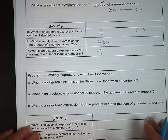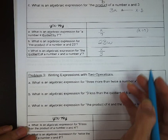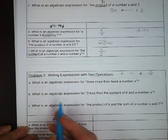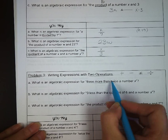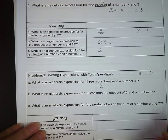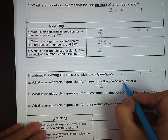Okay, moving on to problem number three. Writing expressions with two operations. Now we're going to be combining, so we need to pay attention to what comes first and what it's talking about. So, what is an algebraic expression for three more than twice a number x? So let's break it down. What two operations do we have here? We've got more than, so we're adding three, and we have twice a number x, so two times x. So when we write that in our proper form, it's two x plus three.